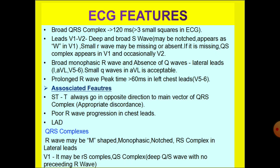In the QRS complex, the R wave may be M-shaped, monophasic, notched, or an RS complex in lateral leads. In lead V1, it may appear as an RS complex — that is a small R wave and deep S wave — or a QS complex, which is a deep Q and S wave with no preceding R wave.